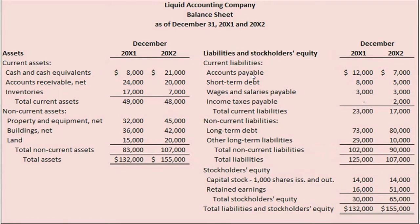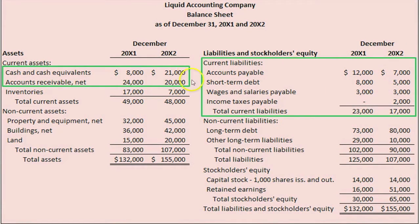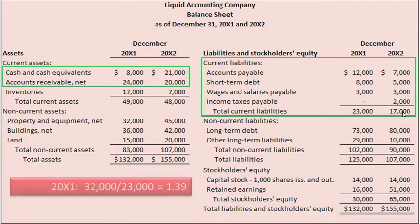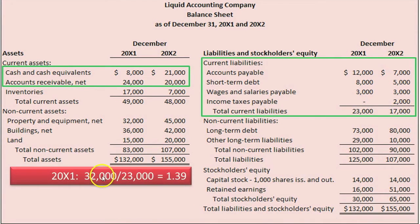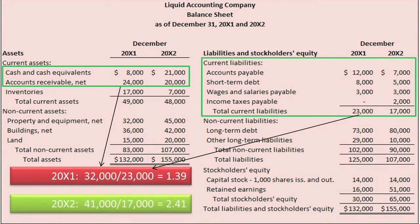Let's compute LAC's Quick Ratios for 20x1 and 20x2. We've only highlighted the most liquid current assets, leaving out inventory, and we have all current liabilities. For 20x1, the computation is $32,000 of most liquid current assets divided by $23,000 of current liabilities. For 20x2, it's $41,000 divided by $17,000.